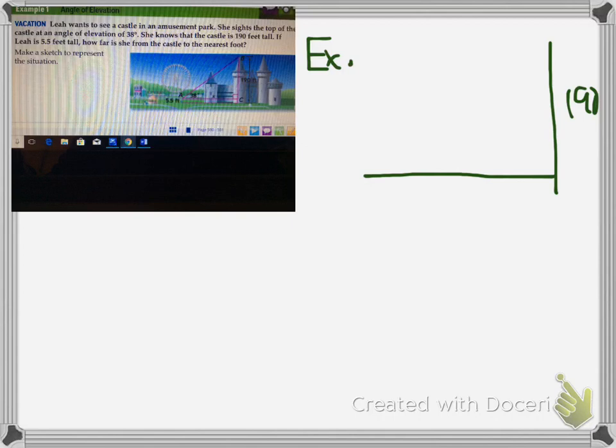Leah wants to see a castle at an amusement park. She sights the top of the castle at an angle of elevation of 38 degrees. She knows that the castle is 190 feet tall. If Leah is 5.5 feet tall, how far is she from the castle to the nearest foot? So you can see a drawing, but let me map out something here. So here's Leah. My artiste skills are so good.